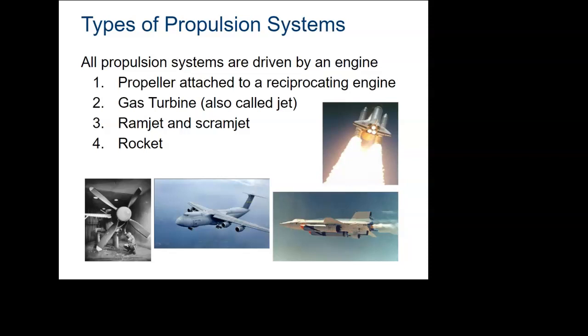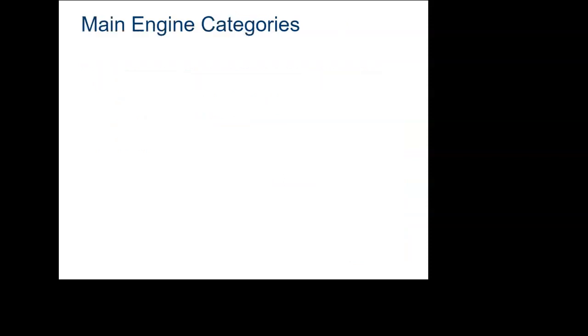There are different types of propulsion systems, and a lot of those are shown here. In the old days, in the invention of the airplane, there were propellers. The term gas turbine is synonymous with jet. Gas turbines are also used for things besides airplanes. There are also special kinds of jets called ramjets and scramjets, and then of course rockets. We are going to focus on the first two in this slide deck.